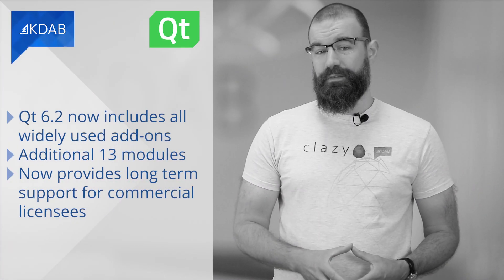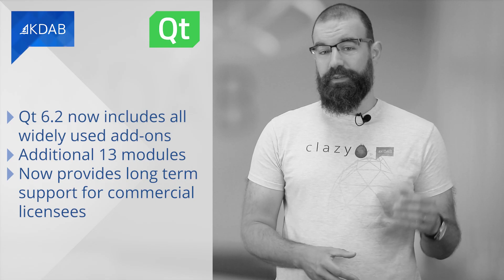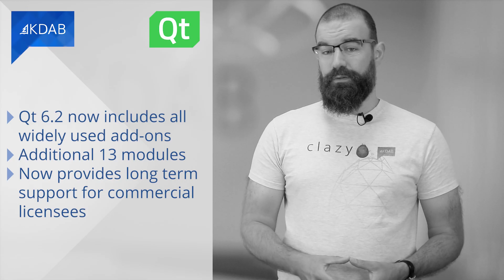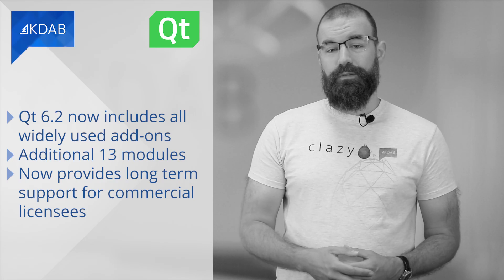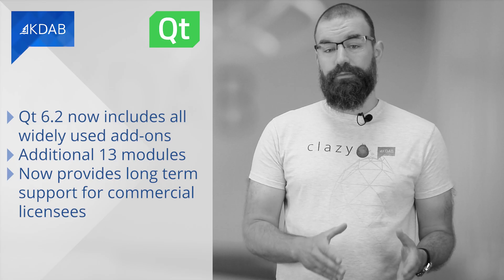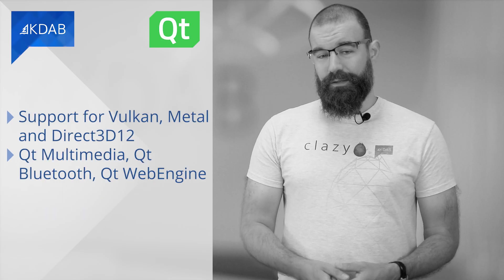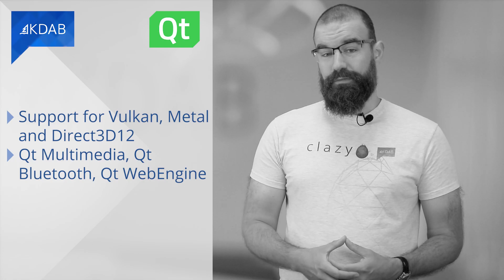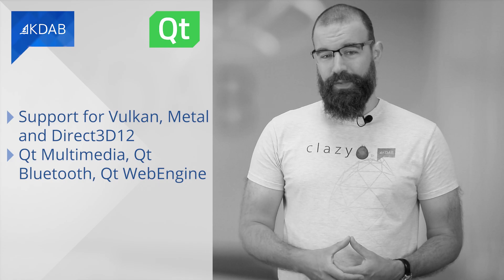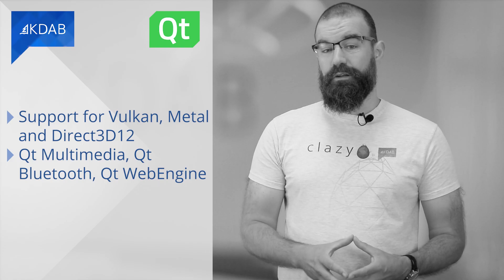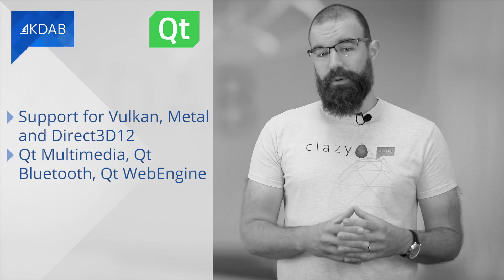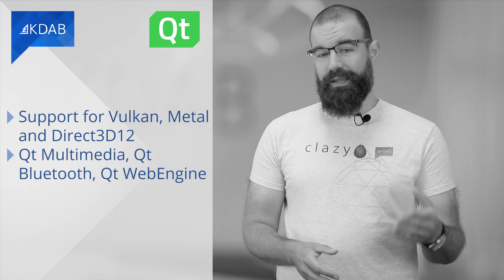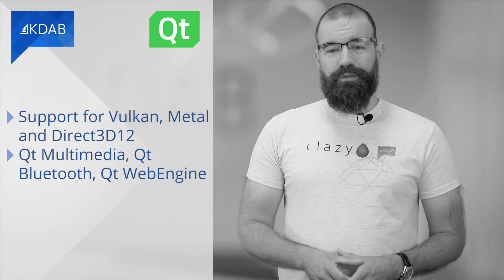Qt 6.2 is the first Qt 6 release which includes all widely used Qt add-on modules previously available in Qt 5.15. Compared to Qt 6.0, it brings support for 13 additional modules, totaling over 50 modules. Qt 6.2 is also the first release in the Qt 6 series to provide long-term support for commercial licensees. It extends Qt 6's scalability promise with support for Vulkan, Metal, and Direct3D 12 as new deployment environments for hardware-accelerated graphics, and brings significantly updated Qt Multimedia, Qt Bluetooth, and Qt WebEngine modules. More about the alpha version can be found in the link below.